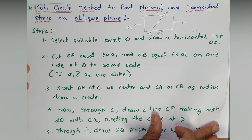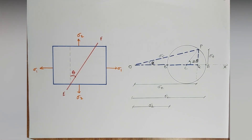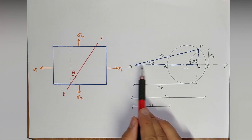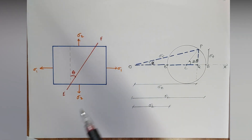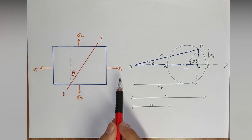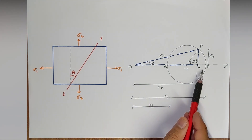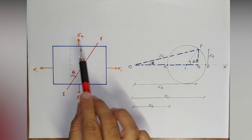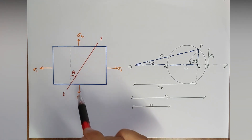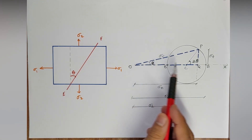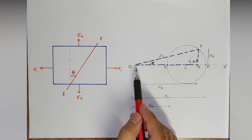Corresponding to the value of σ1, take a particular scale and draw OA. σ1 is always considered positive. OA is taken for σ1, and if the direction of σ2 is the same as that of σ1, then σ2 is also positive — so OB is marked on the same side. If σ2 were negative, it would be on the other side. After marking OA, we mark OB to the same scale.